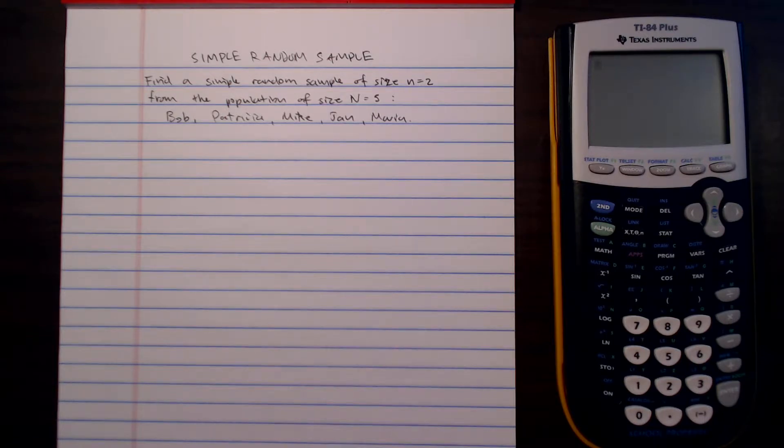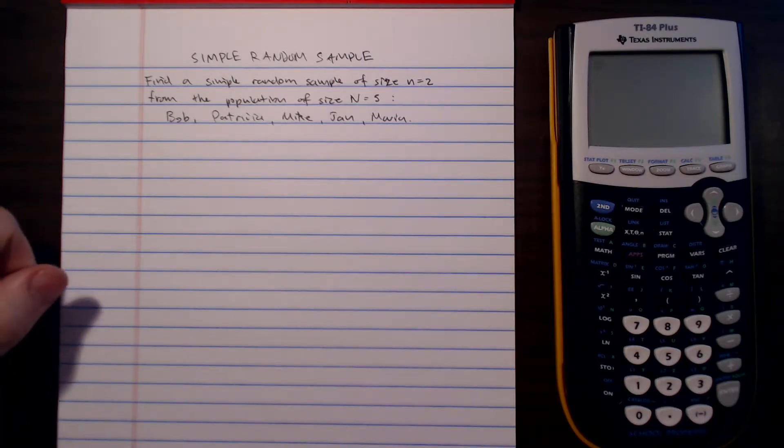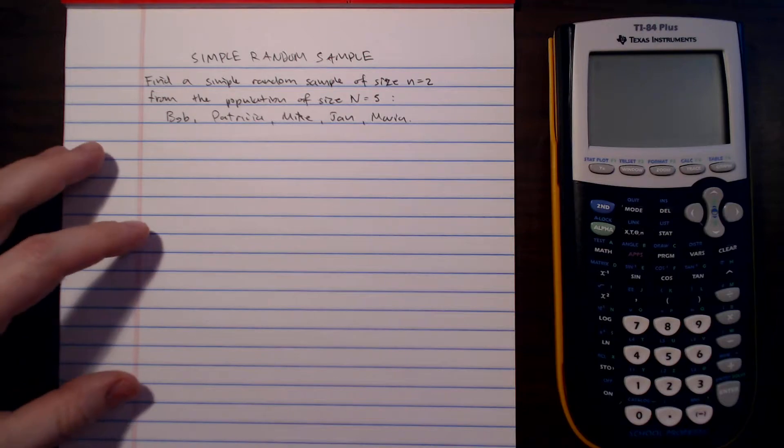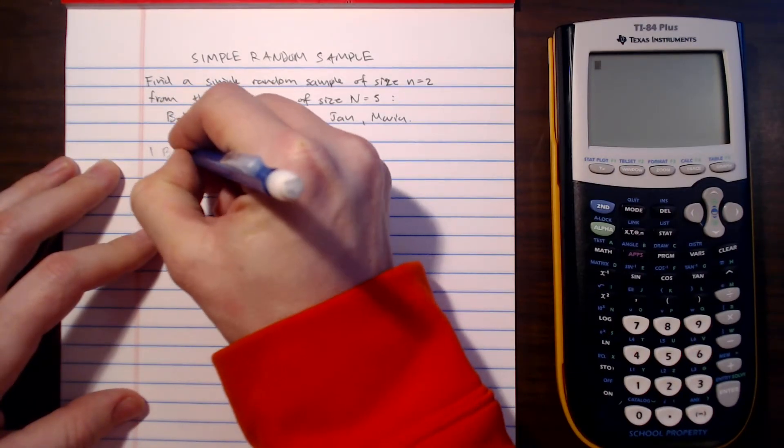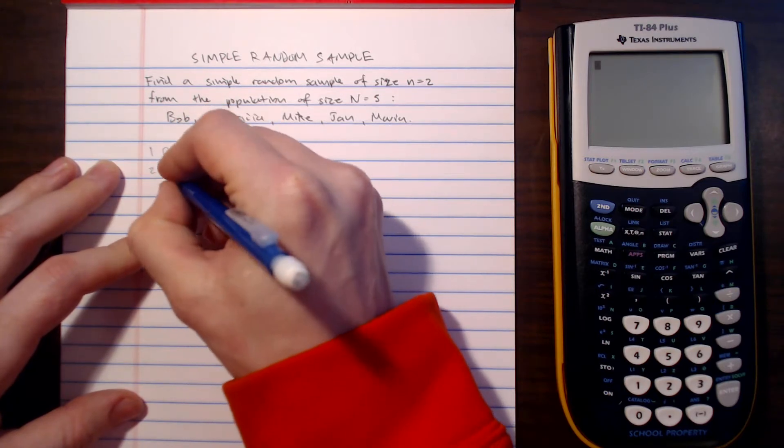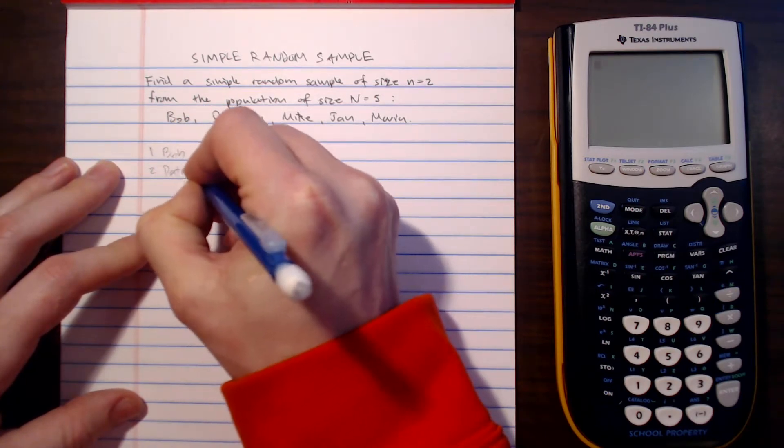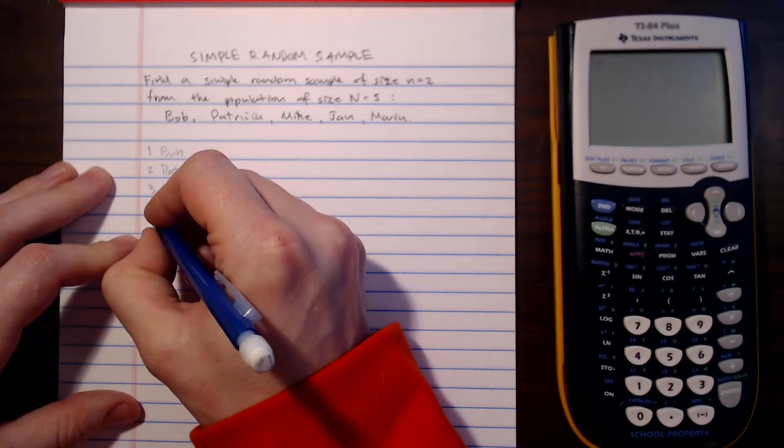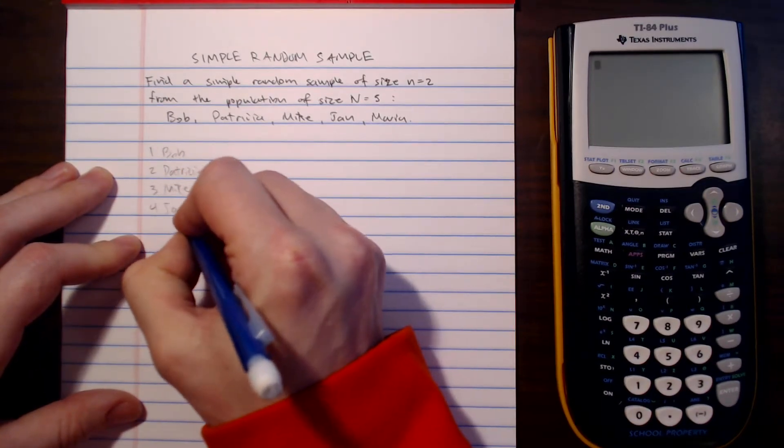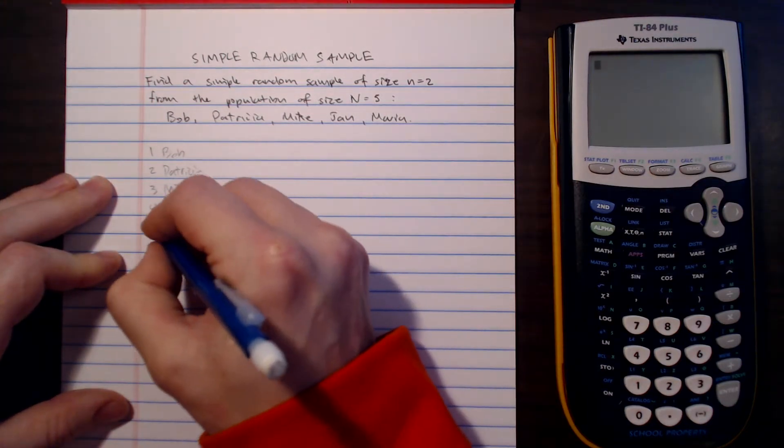To do so we first need to enumerate this list of people. So we have Bob, Patricia, Mike, Jan, and Maria.